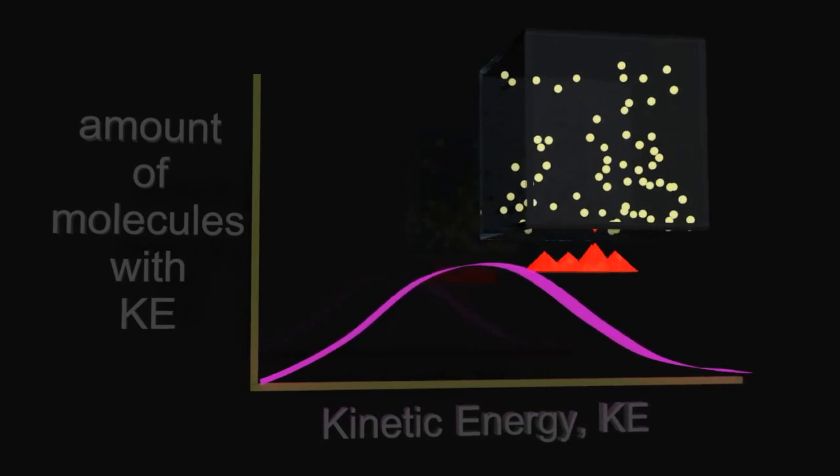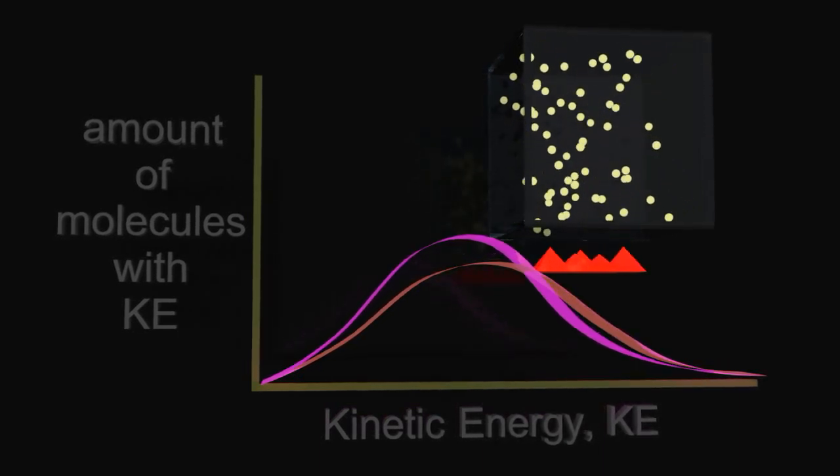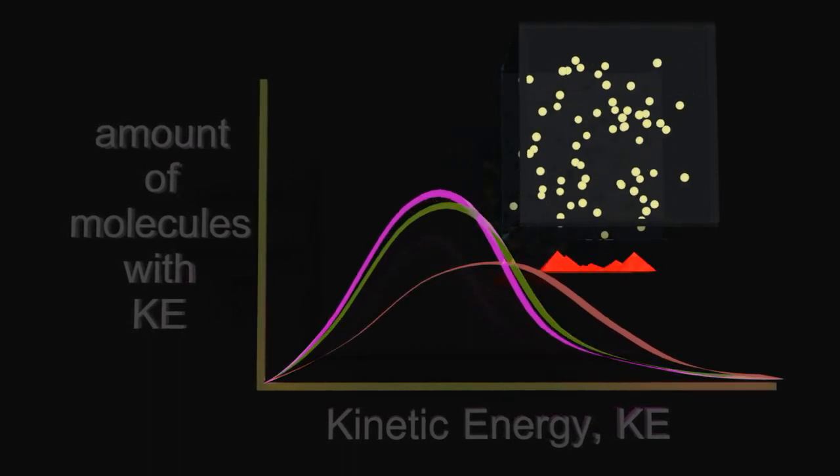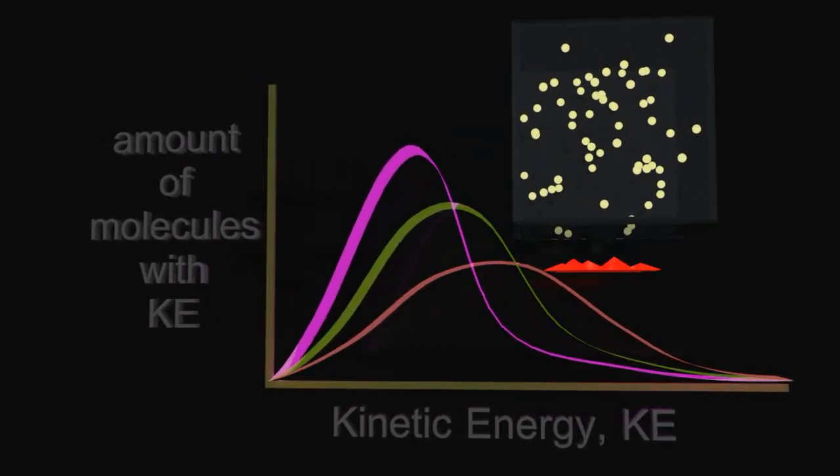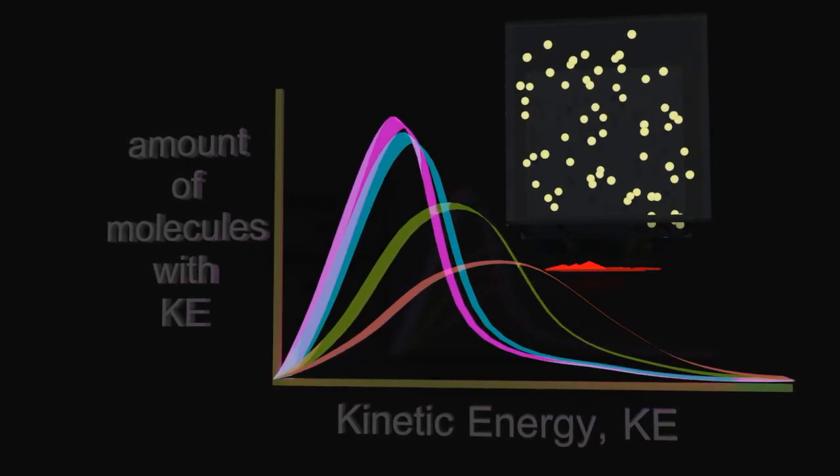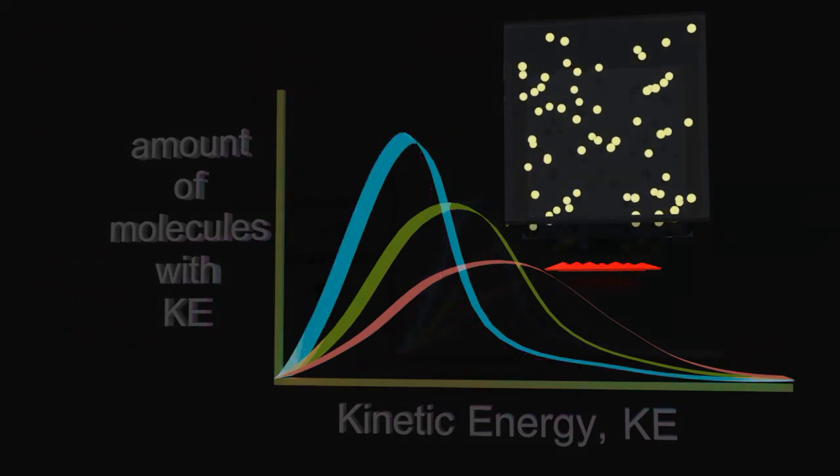I'm now going to cool down the gas and as I cool it down, as expected, they're going to go slower and slower. And I'm going to leave behind three lines. The IB would expect you to draw these three lines. Notice that the area under those three lines is the same. And the reason the area is the same under those three lines is because the number of gas particles is unchanged.